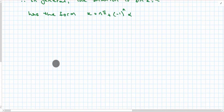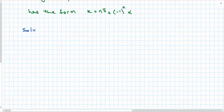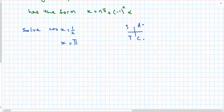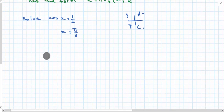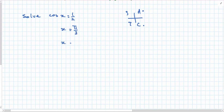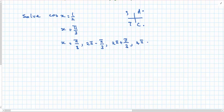Now let's look at the cosine case. Let's solve cos x equals a half and give our answer in general form. Drawing my four quadrants — cosine is positive in the first and the fourth. In the first quadrant, x would be π/3. Going around, the answers would be π/3, then 2π minus π/3, then 2π plus π/3, then 4π minus π/3 — you get the picture.